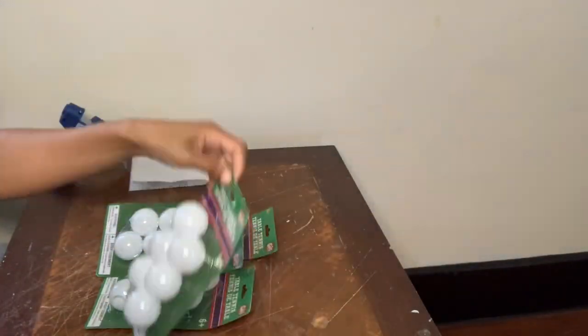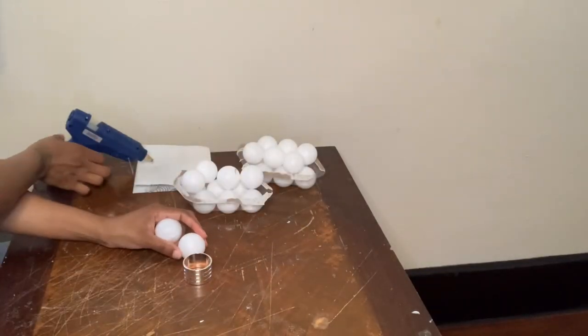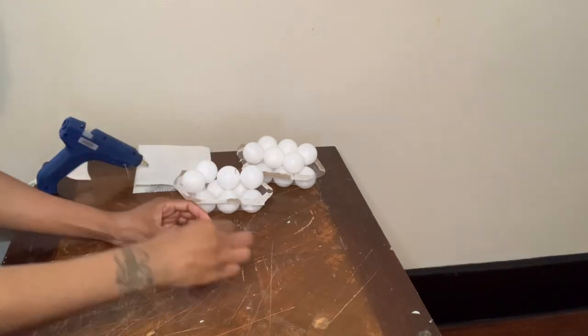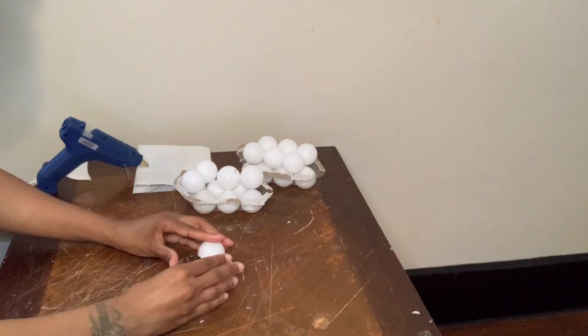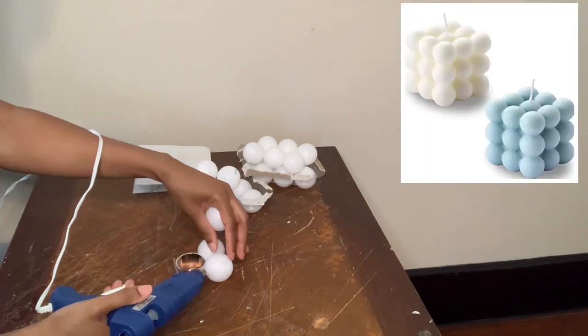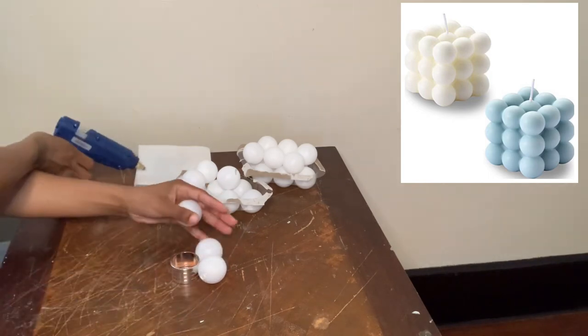Next, I have these napkin rings and also these tennis balls. I'm basically using the napkin ring as a guide to keep the tennis balls in place as I glue them around the napkin ring in a circle, which I am mimicking these cute bubble candles that you guys see in the upper right-hand corner.